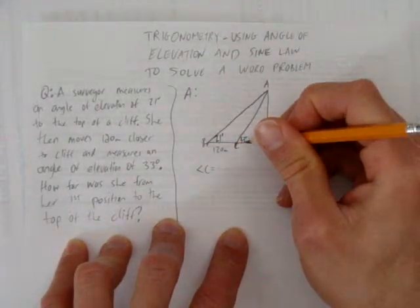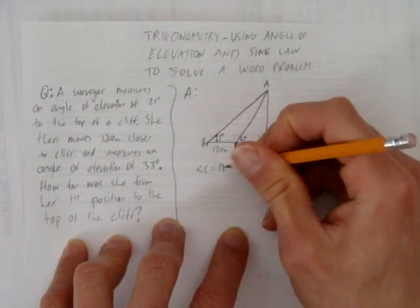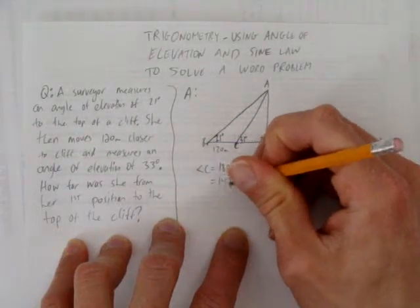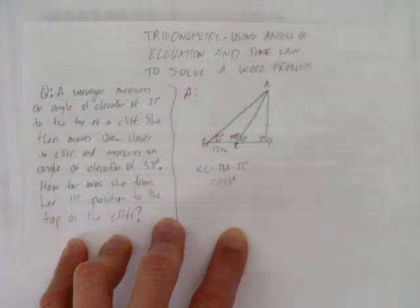How do we get angle C? We know it's 180 degrees all the way around here. So angle C right in here is 180 minus 33 degrees, which is 147 degrees. So we can write that in our diagram now. This is 147 degrees.